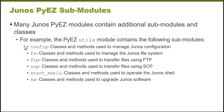The Junos PyEZ library consists of a series of modules. Some of the primary modules contain sub-modules. The example Python script you will see in this Learning Byte leverages the Junos PyEZ config module, which is capable of performing configuration options on Junos platforms. It can create a configuration object class that can be associated with a device object, and we can load, commit, and roll back configuration. There are additional modules in the Junos PyEZ library that can manage the file system, transfer files, run shell commands, do software upgrades, and power cycle devices — similar functionality to what's available in the Junos CLI.